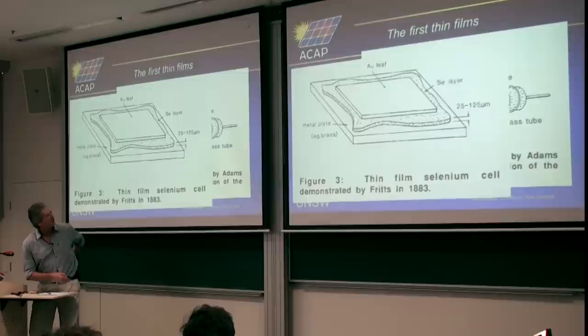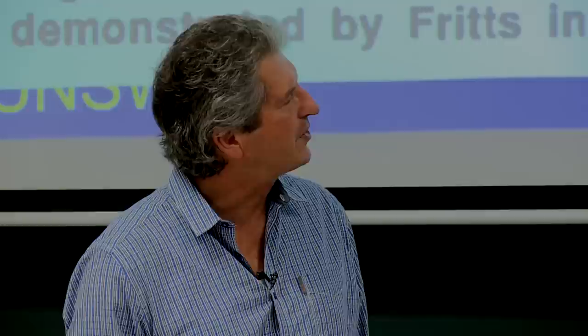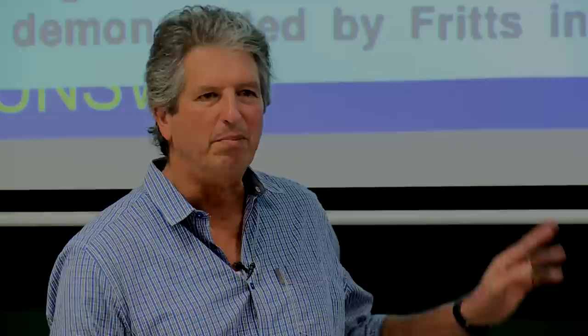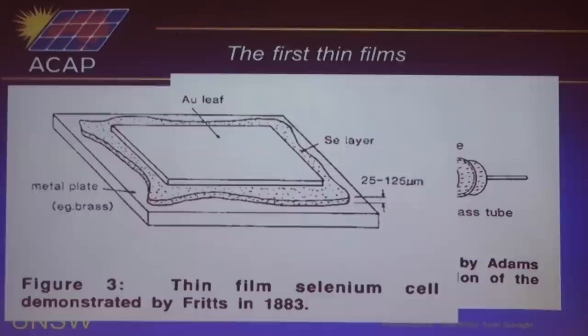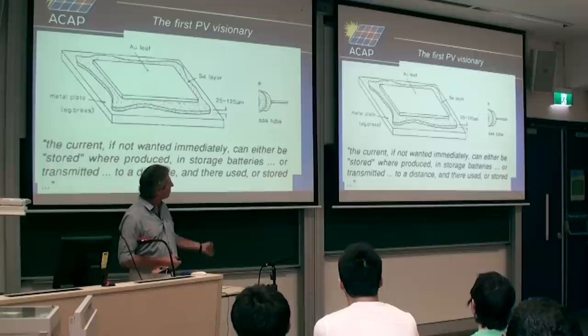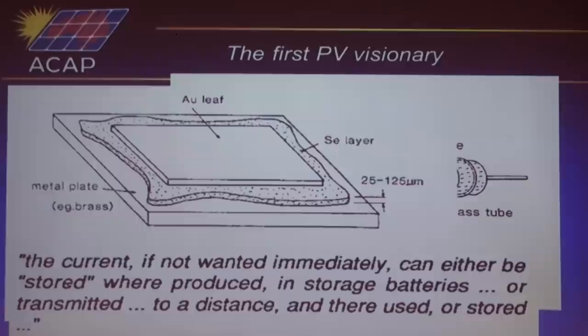The person who probably really started it all was Edgar Fritz, who in 1883 demonstrated this device. He managed to press out a bit of selenium onto a brass plate, then put a very thin beaten gold leaf over the top to let the light through, and was able to demonstrate the photovoltaic effect. He was quite a visionary — even then he saw that current can either be stored in a storage battery or transmitted to distance and used or stored. He was really an inventor, interested in everything, and got quite a few patents to his name, though the patent he filed on this device didn't get up.